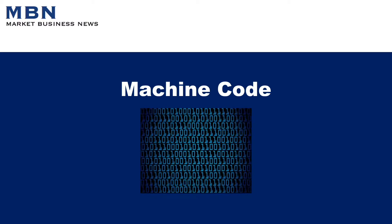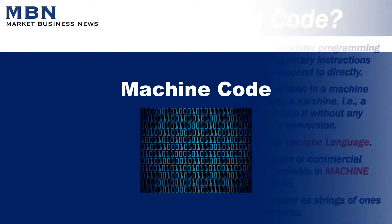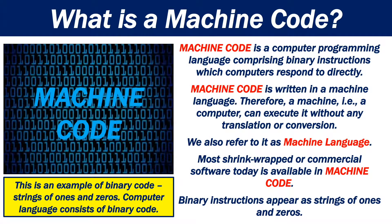What is machine code? Machine code is a computer programming language comprising binary instructions which computers respond to directly. Machine code is written in a machine language. Therefore, a machine, i.e. a computer, can execute it without any translation or conversion. We also refer to it as machine language.